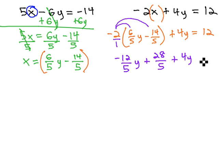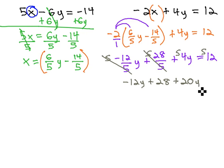It's going to give us negative 12 fifths y plus 28 fifths, plus 4y equals 12. And then to make life a little easier, I'm going to clear the denominators by multiplying each term by the LCD of 5. Each term, not just the fractions, but each term. That way, it'll divide out of the fractions, giving us negative 12y plus 28 plus 5 times 4 is 20y equals 5 times 12, or 60.